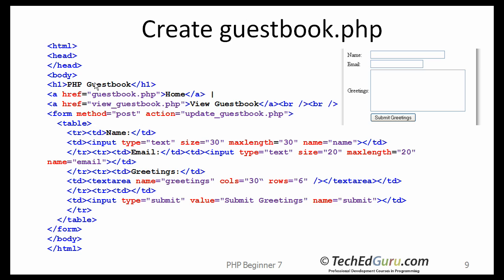I will explain a few things here. The guestbook.php file also has a link to home. View_guestbook.php will let you bring up the currently stored values, and when the user clicks on the submit button, it is update_guestbook.php that is going to be run. The rest of the code essentially has to do with creating the form — name, email, greetings — displayed in a simple table. The submit button has the caption 'Submit Greetings'. That's the guestbook.php file.